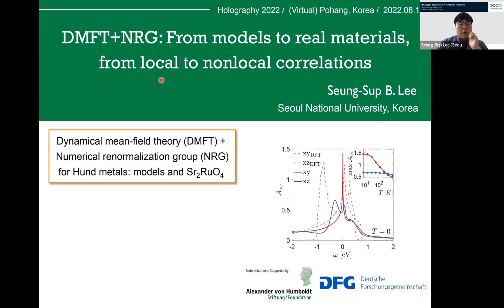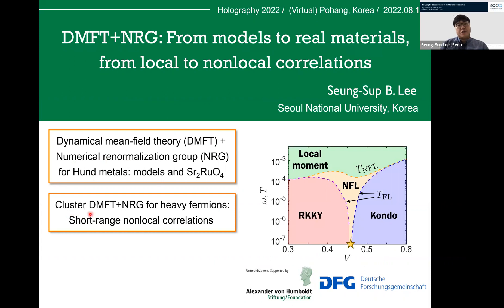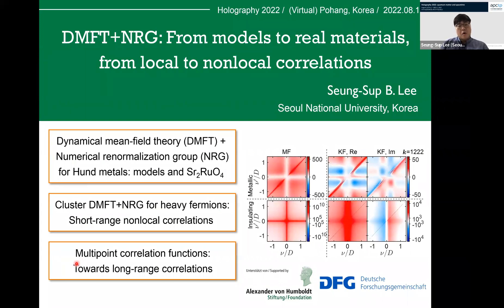This talk consists of three parts. For the first part, I'll explain my method: dynamical mean field theory, DMFT, and the numerical renormalization group, NRG, and its successful application to studies on Hund metals. For the second part, I will tell you about a cluster extension of this DMFT plus NRG method for studying heavy fermion systems where short-range non-local correlations play a key role. And as the last part, I will talk about our recent breakthrough in the theory of multi-point correlation functions, which are the key tools for studying long-range strong correlations.